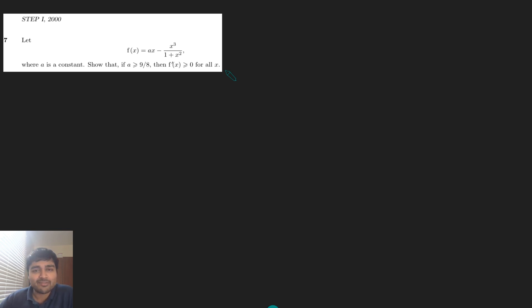Let's have a look at this. So we have f(x) equals ax minus x cubed over 1 plus x squared, where a is a constant. We want to show that if a is at least 9 eighths, then f'(x) is at least 0 for all x. So if a is at least this constant 9 eighths, which seems kind of random, then the derivative is at least 0. And what's interesting about this STEP problem is it doesn't have parts. It's just one question.